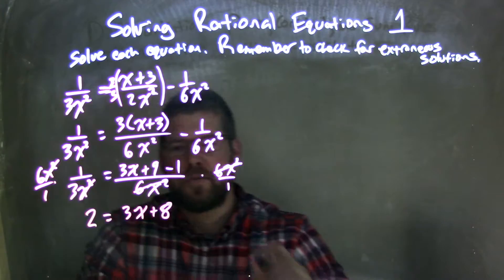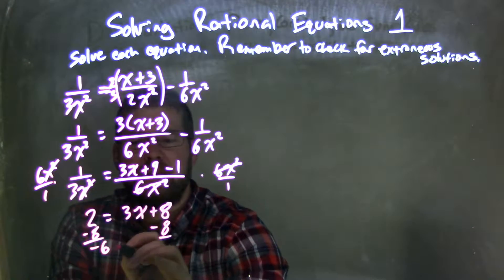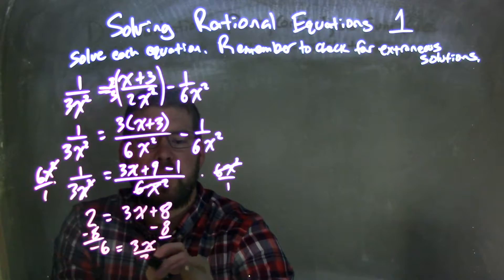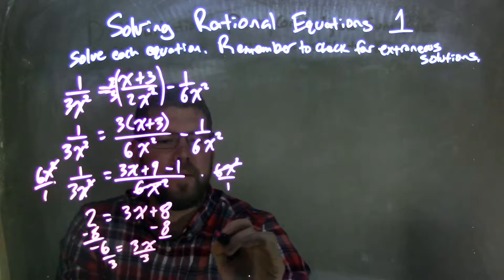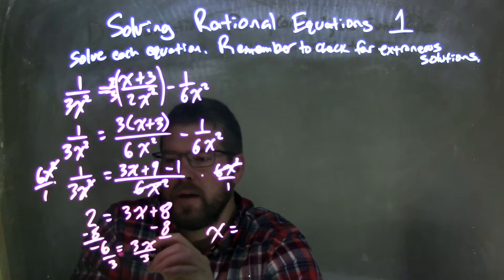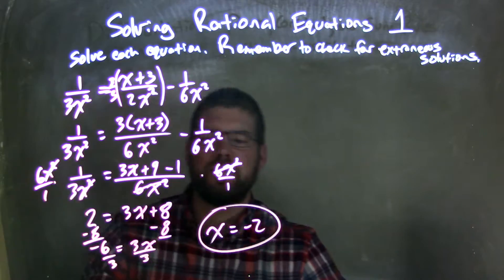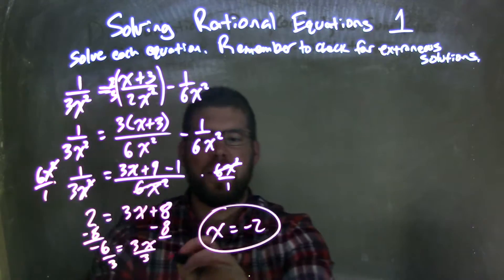So now we're solving for x. Pretty simple at this point. We subtract 8 from both sides, giving me negative 6 equals 3x. Divide by 3 on both sides—negative 6 divided by 3 is negative 2—so x equals negative 2.